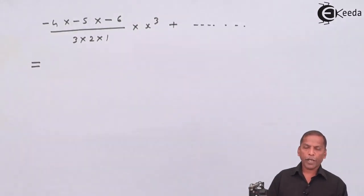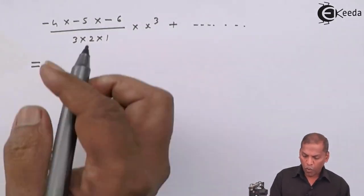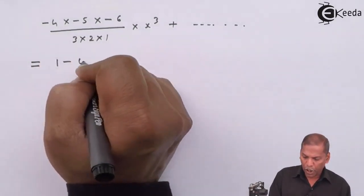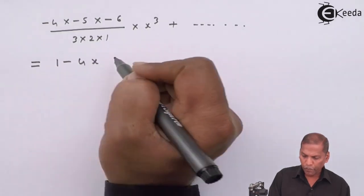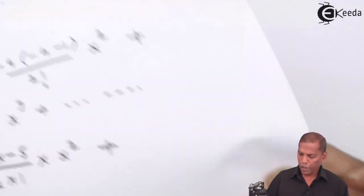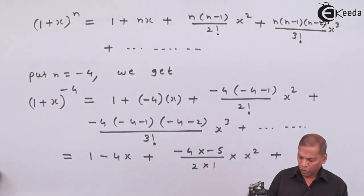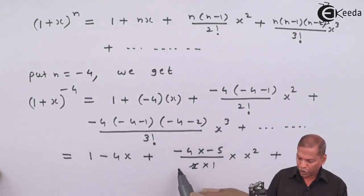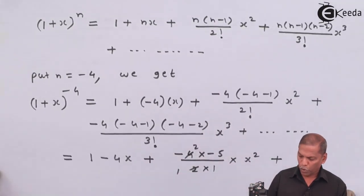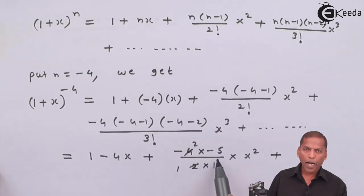So the next step will be 1 minus 4x. Now here minus times minus gives plus, then if we cancel, 2 goes into 2 once and into 4 twice. So 2 times 5 gives 10x squared.